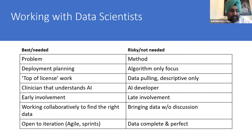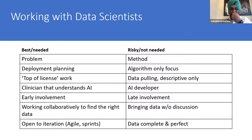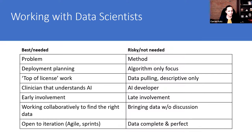We've been running short on time, so to wrap up: a clinician who understands AI — and I think all of you do — allows us to get involved early, work collaboratively to find the right data, and be productive. Be open to working in different ways, especially on a cross-functional team. Give agile sprints and the iterative approach a try. Data is never complete or perfect — don't wait until that point to publish or do anything. Get started early and involve data scientists early. That's my biggest advice.